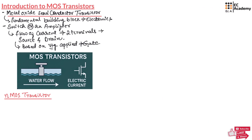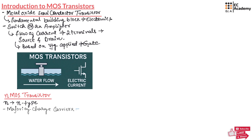Now let us understand the N-MOS Transistor. In an N-MOS Transistor, N stands for N-type, which means the majority charge carriers are electrons. The electrons are negatively charged, so they are attracted by positive voltage.